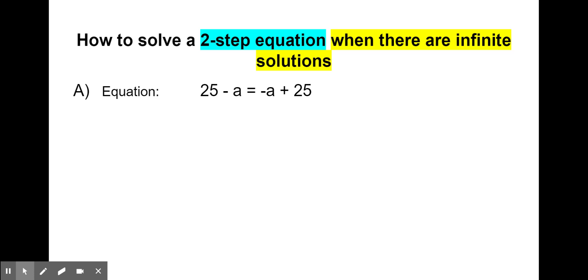We have for our equation 25 minus a equals negative a plus 25. Notice on the left side we have 25, our constant, which is just a number, and on the right side we have 25, a constant. On the left we also have negative a, a variable term, and on the right we have negative a, a variable term.